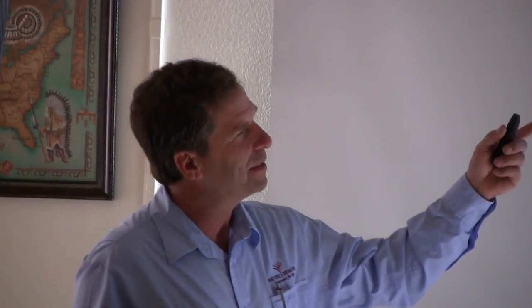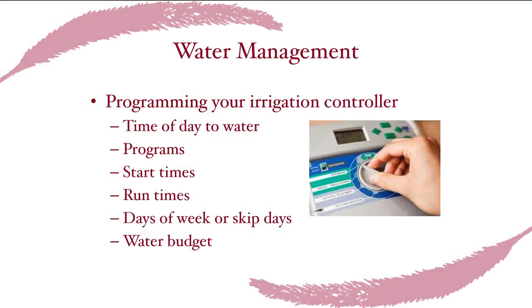To summarize irrigation scheduling: water generally between midnight and 6 a.m. for overhead systems. Programs let you set different watering days and frequencies for different zones. Start times define what time of day and how often the cycle repeats. Run times are the duration — five minutes, twenty minutes, etc. Controllers also offer options like even days, odd days, days of the week, or skip days.